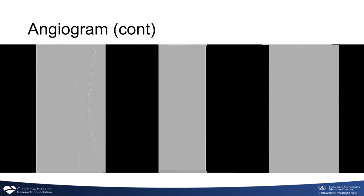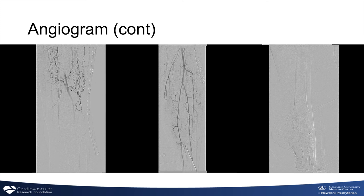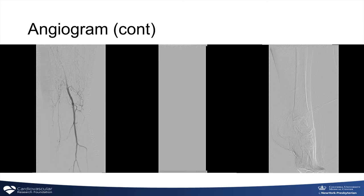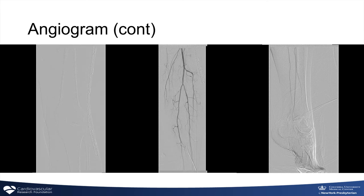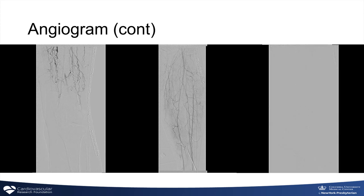A clearer picture shows a total blockage of about five inches in her thigh. The artery resumes with some lumpy, bumpy disease but fortunately not too bad of blockages further down. We have pictures all the way down to the foot showing that blood actually reaches the foot pretty intact.